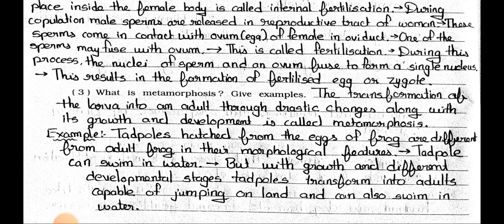Question number 3: What is metamorphosis? Give an example. Answer: The transformation of the larvae into an adult through drastic change along with its growth and development is called metamorphosis. Example: Tadpoles, which hatch from eggs of frogs, are different from adult frogs in their morphological features. Tadpoles can swim in water, but with growth and developmental stages, tadpoles transform into adults capable of jumping on land and swimming in water. Other examples are caterpillar of silkworm transforming into silkworm.